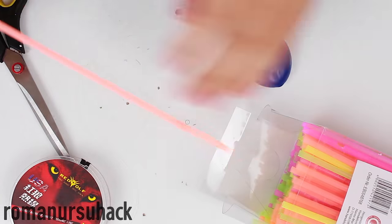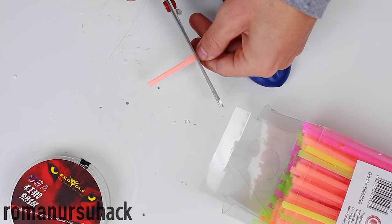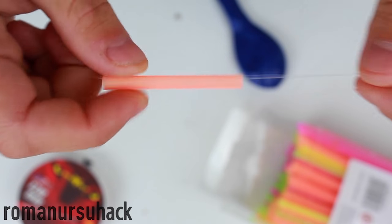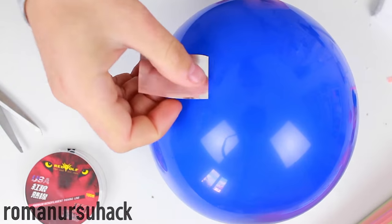The second idea is pretty old, maybe even comes from the times of our grandparents. Though they took a straw from the pen instead of a modern straw. So cut a small piece and pass a line or a thread through it. Then inflate our balloon and stick the straw on the side.